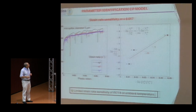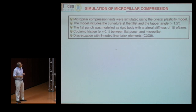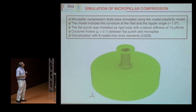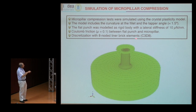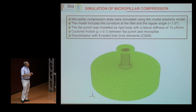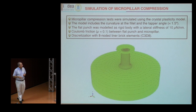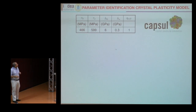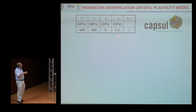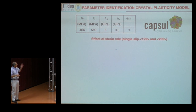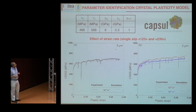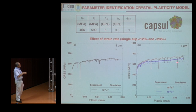The second thing is fitting all the other parameters through simulation of the micropillar compression test. This is the finite element mesh of the micropillar, including the fillet and the flat punch, taking friction into account — all the details are there, and of course the crystal plasticity model is used. We then perform parameter identification of the crystal plasticity model from the micropillar compression tests, obtaining values for the initial critical resolved shear stress, hardening modulus, and latent hardening coefficients. The model captures the effect of strain rate and gives a good result for single slip micropillars of 5 microns in diameter.